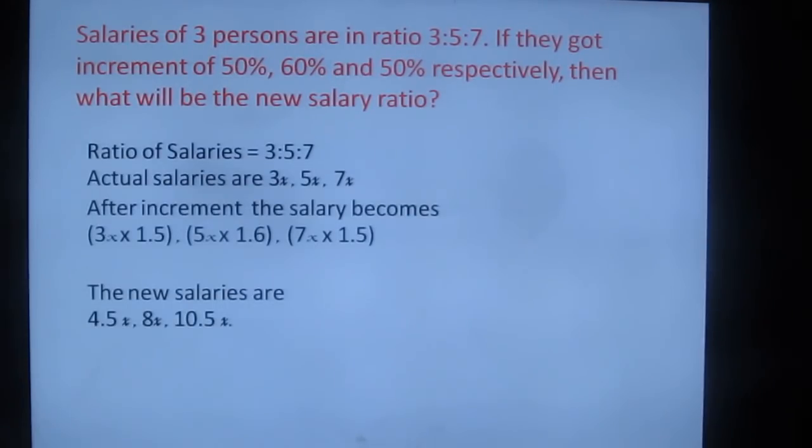Now 4.5, 8, and 10.5. Two cases are in decimal. Ratios cannot be expressed in decimal, so multiply all the terms by 2. So 4.5 into 2, 8 into 2, 10.5 into 2. So 9, 16, and 21.